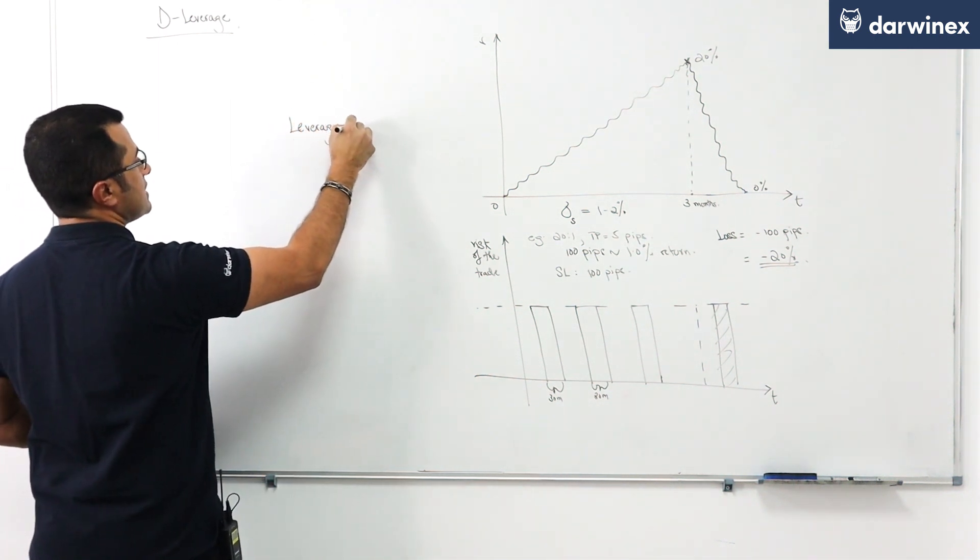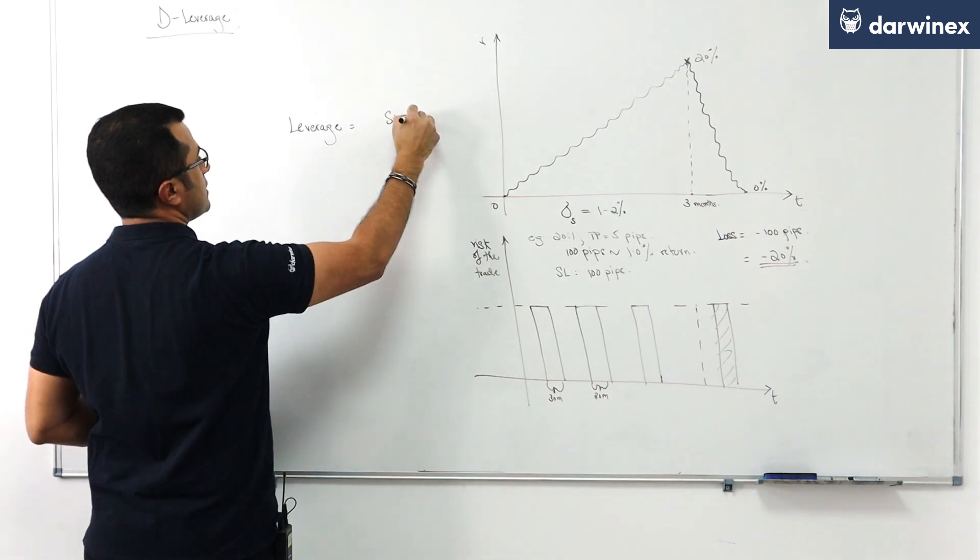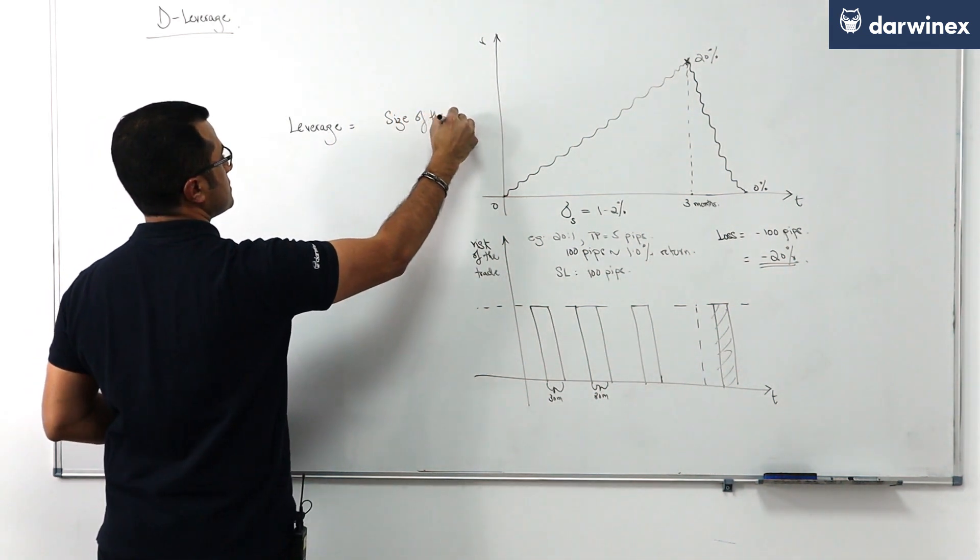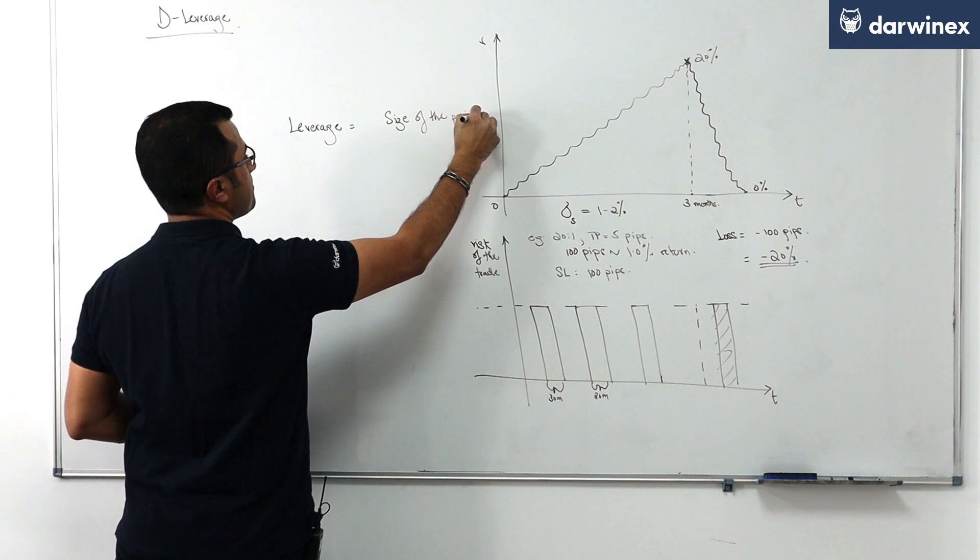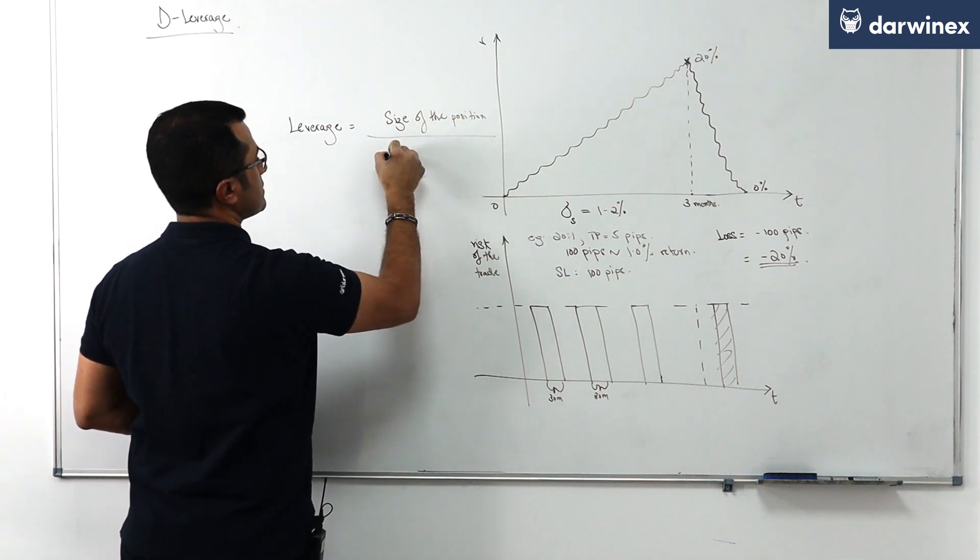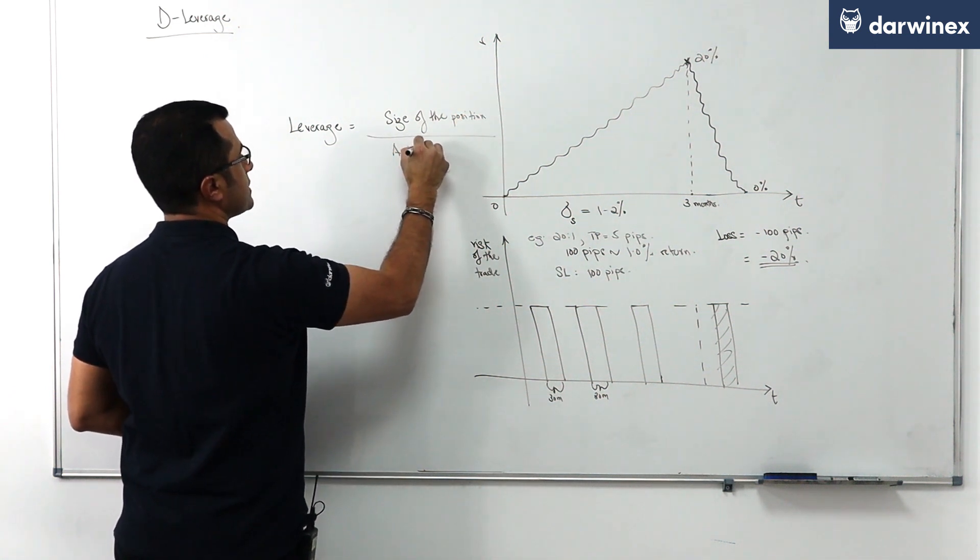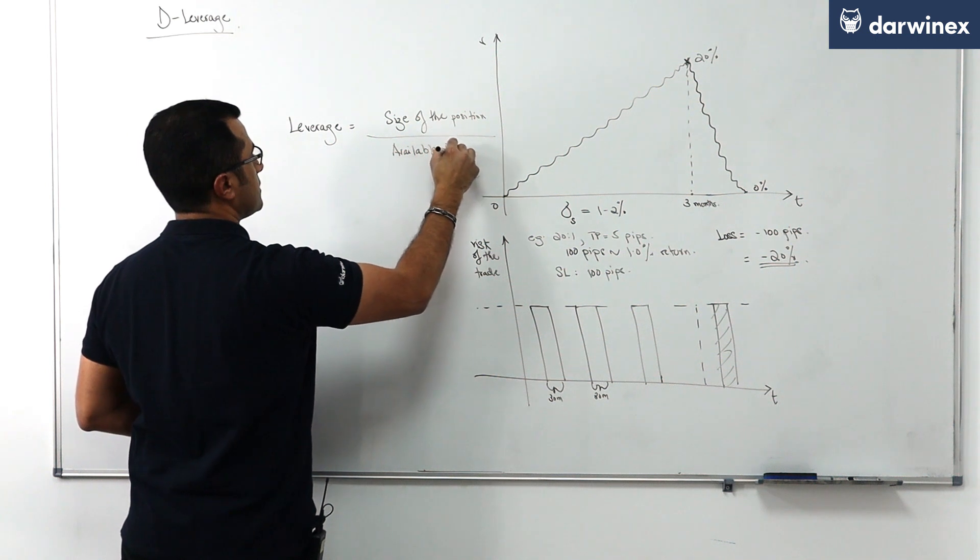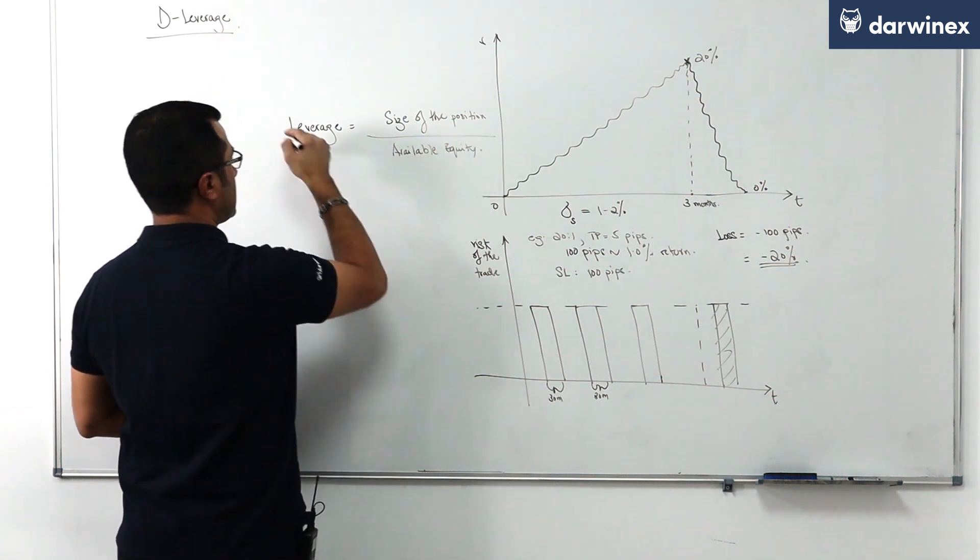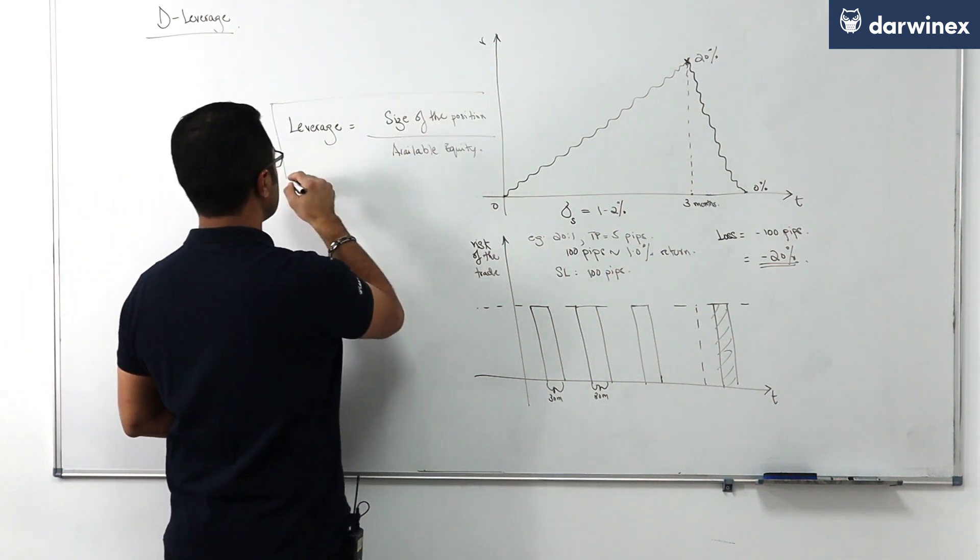Leverage on its own is very simply the size of the position you're taking at any point in time versus the available equity at the point in time that you're opening the position.